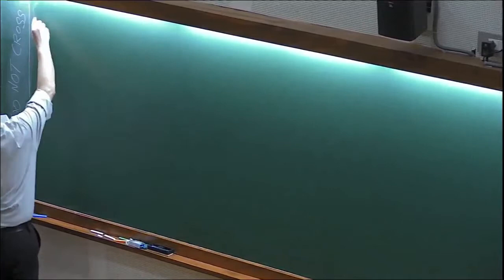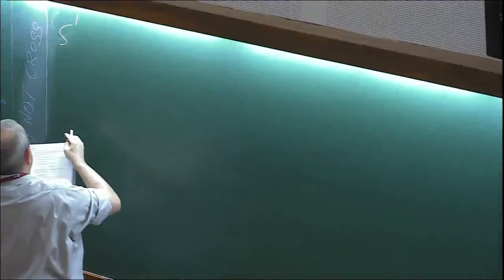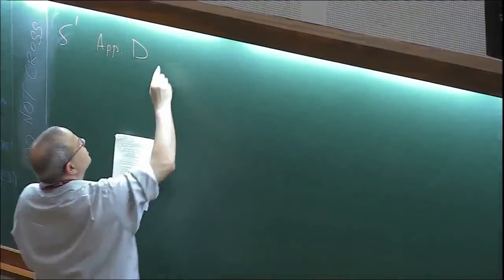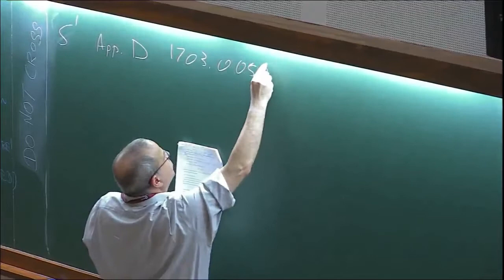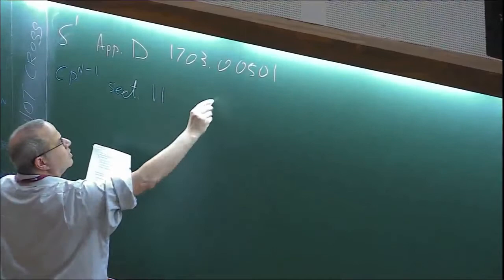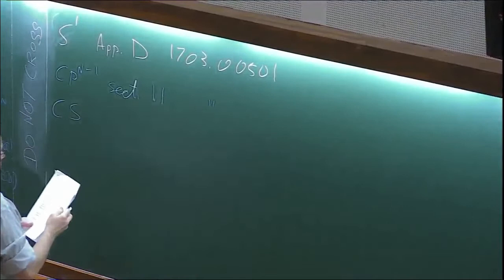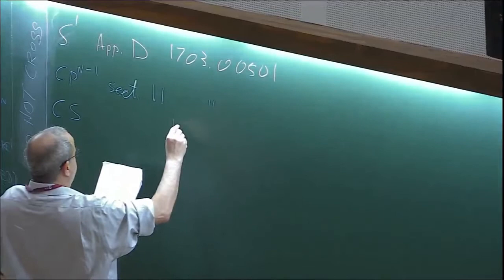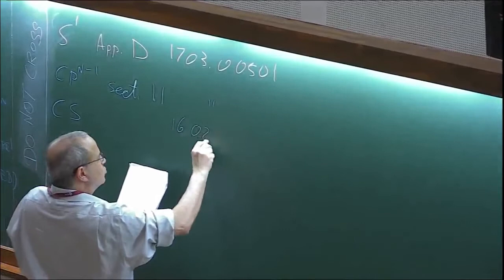I started with a particle on S1, and this is Appendix D — this was just copied from Appendix D of 1703.00501. Then I talked about the CP(N-1) model, which was taken from section 1.1 in the same paper. Then I talked about Chern-Simons theory, and there are many, many reviews on the subject. The presentation I took here copied things from 1602.04251.